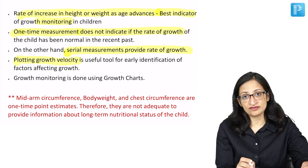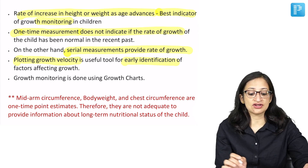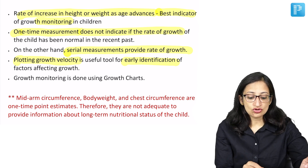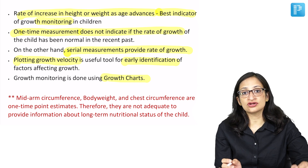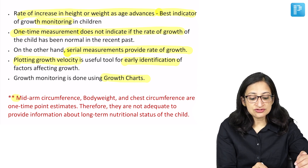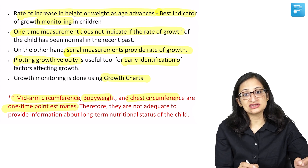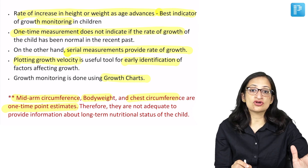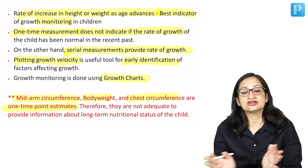Plotting growth velocity using growth velocity charts is a useful tool for early identification of factors affecting growth. Growth monitoring is done using growth charts — every three to six months you plot the child's height and see how it is growing. Mid-arm circumference, body weight, and chest circumference are one-time point estimates, and a single value is not enough to monitor long-term nutritional status.